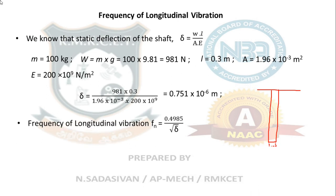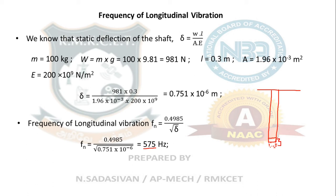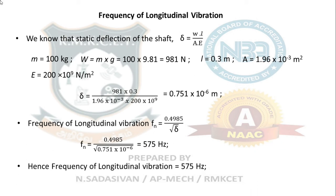Using the same natural frequency formula fn = 0.498 / √δ: finding δ is the difficult part; after that it is straightforward. So 0.498 divided by the square root of 0.751 × 10⁻⁶ gives 575 Hz. This means the alternate elongation and contraction of the shaft due to the applied weight happens 575 times per second. So the natural frequency of longitudinal vibration is 575 Hz.